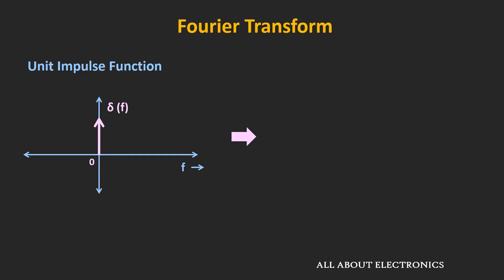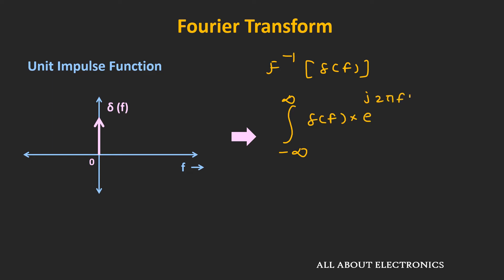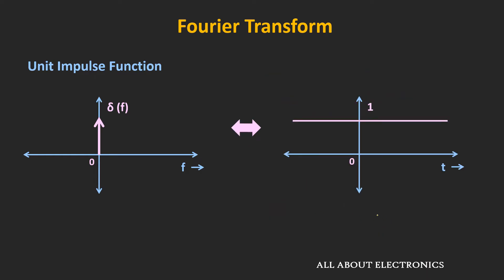Similarly, in the frequency domain, if we have a unit impulse function, then in the time domain we get the DC signal with the amplitude of unity. So to get that, let's take the inverse Fourier transform of this unit impulse function. We know that the inverse Fourier transform can be given as integration from minus infinity to plus infinity of the function times e to the power j times 2πf times df, that is equal to e to the power zero. That means whenever we take the inverse Fourier transform of this unit impulse function, then it is also equal to unity. And in the time domain, the function will look like this.